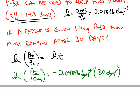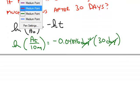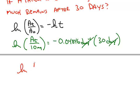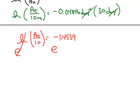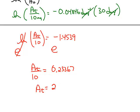Notice inverse days cancels with days, so the right-hand side is unitless. And we get the natural log of our unknown divided by 10 is equal to negative 1.4539. So now it's just a matter of getting rid of the natural log, which means we use e as the base. So the amount at the later time divided by 10 is e to the negative 1.45, which is 0.23367. Or the amount left, when you multiply by 10, is 2.34 milligrams.